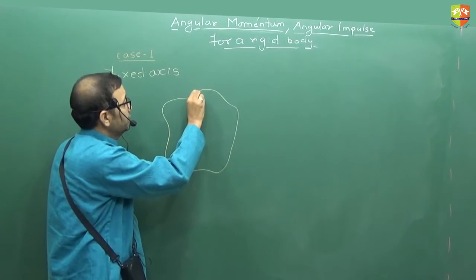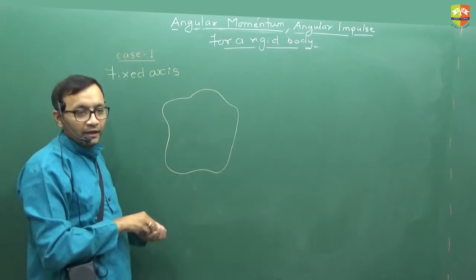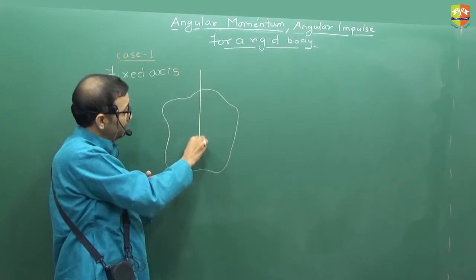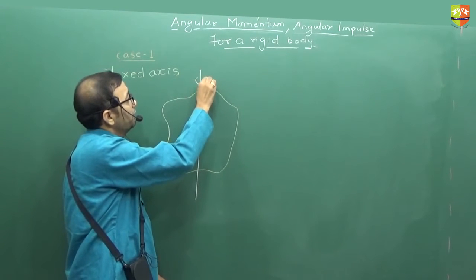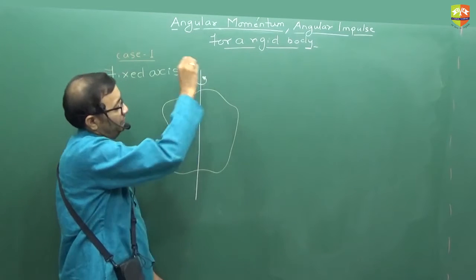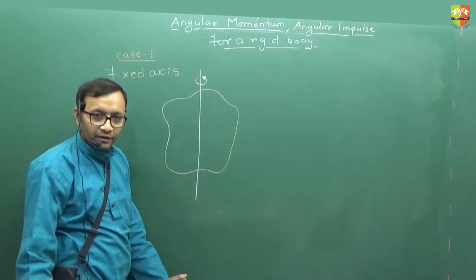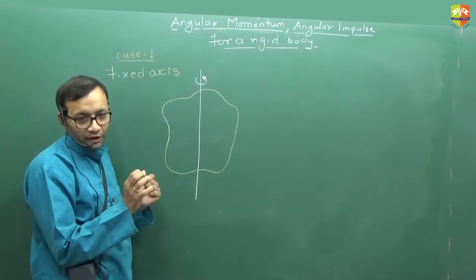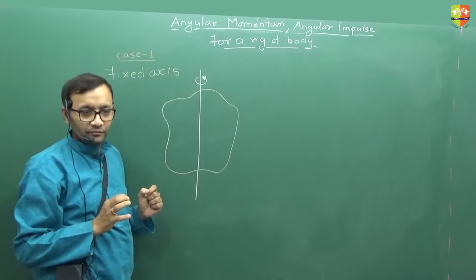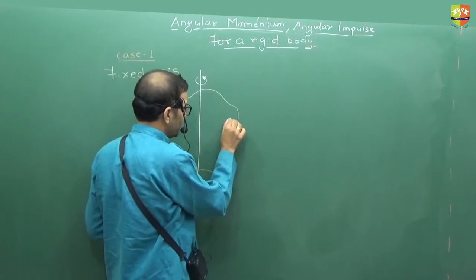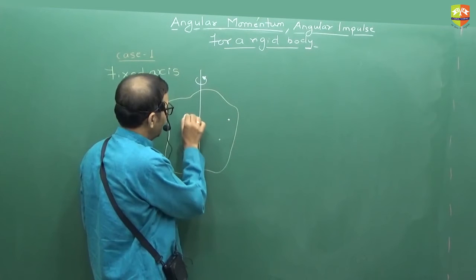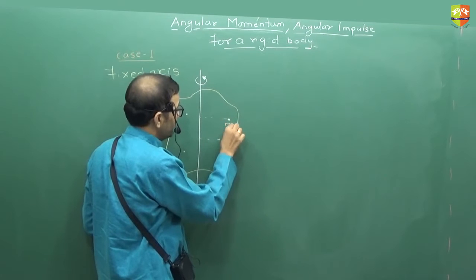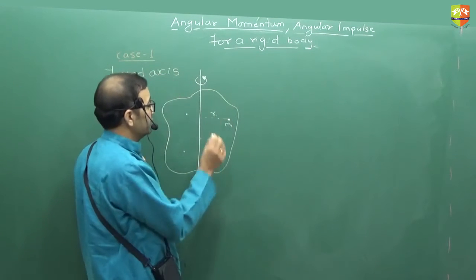This is your rigid body, which can rotate about this fixed axis. I want to find out the angular momentum of the entire rigid body with respect to this axis. I am giving you hints — you derive it yourself, just like you derived the kinetic energy of a rigid body about a fixed axis. Let's say this is point mass M1 at a perpendicular distance R1 away.